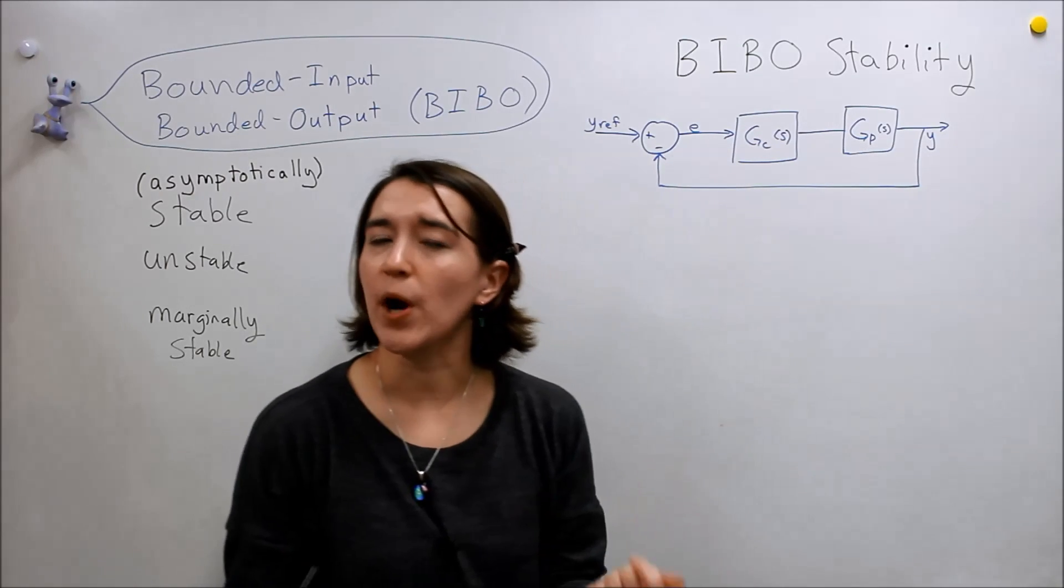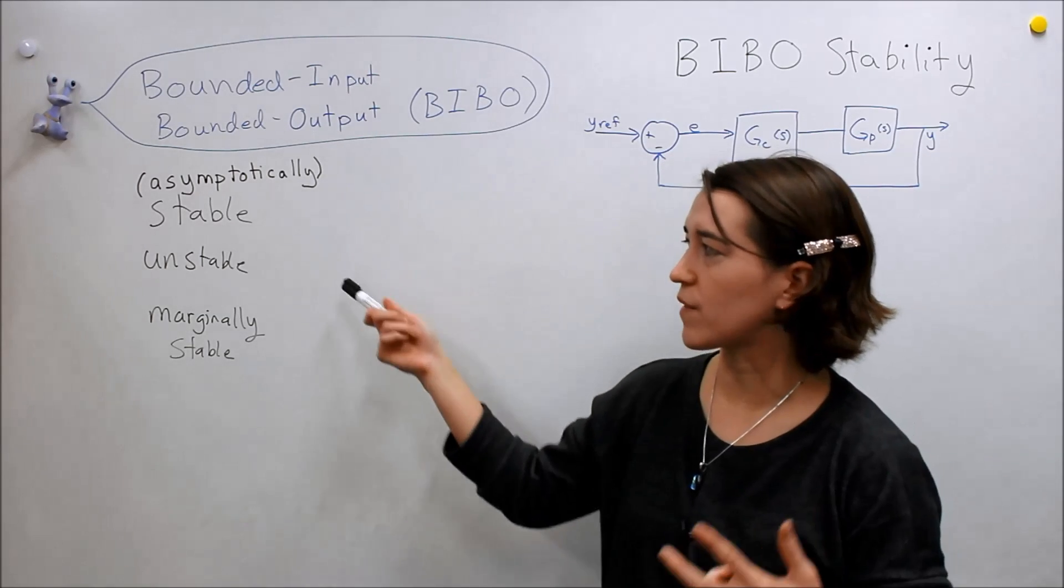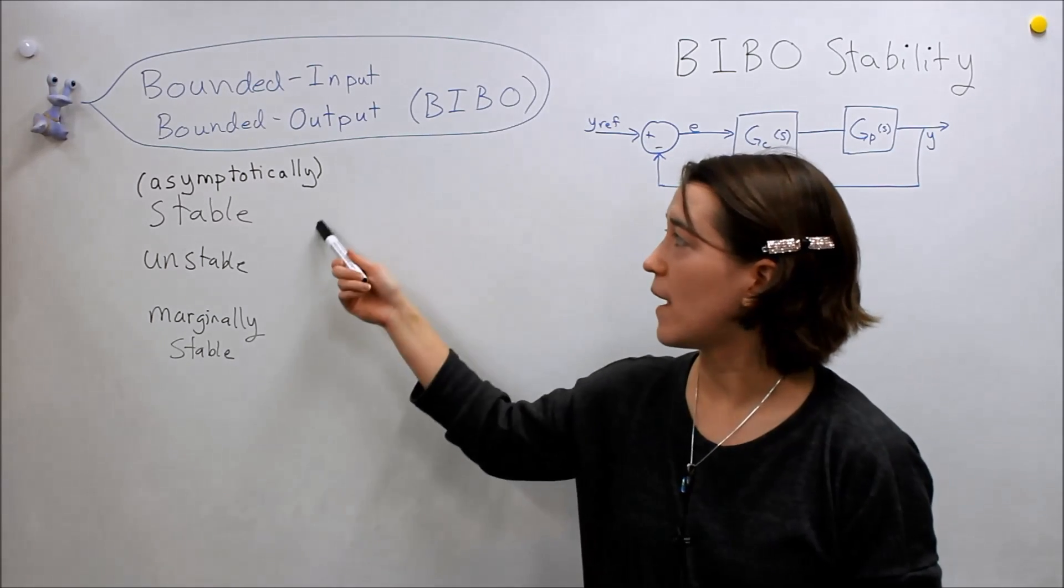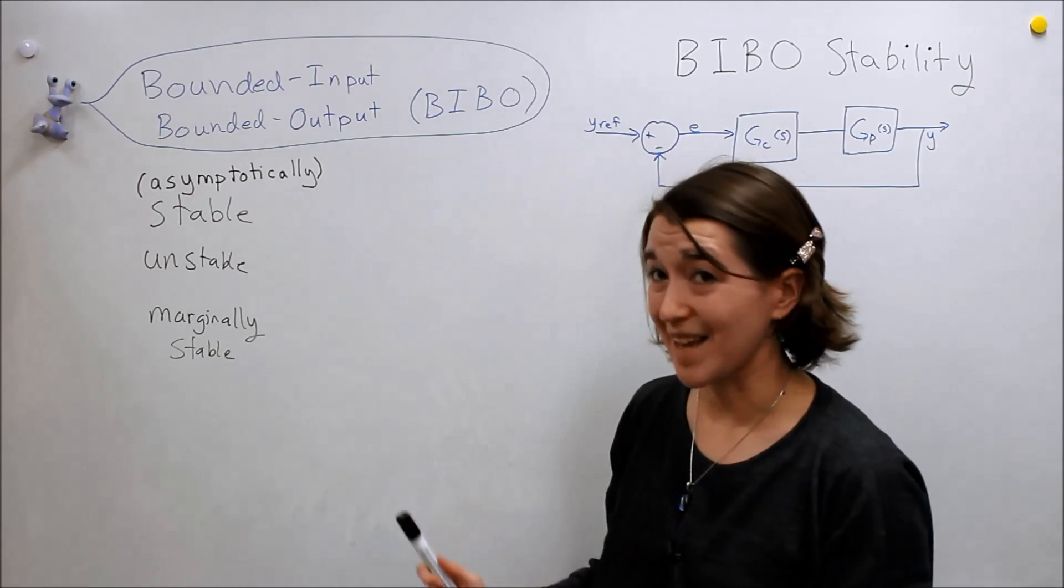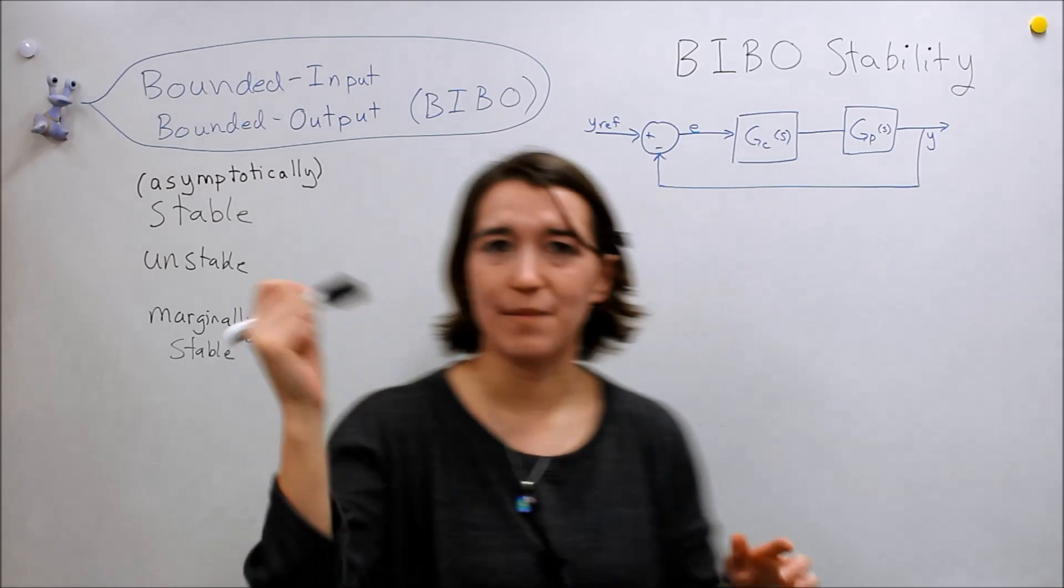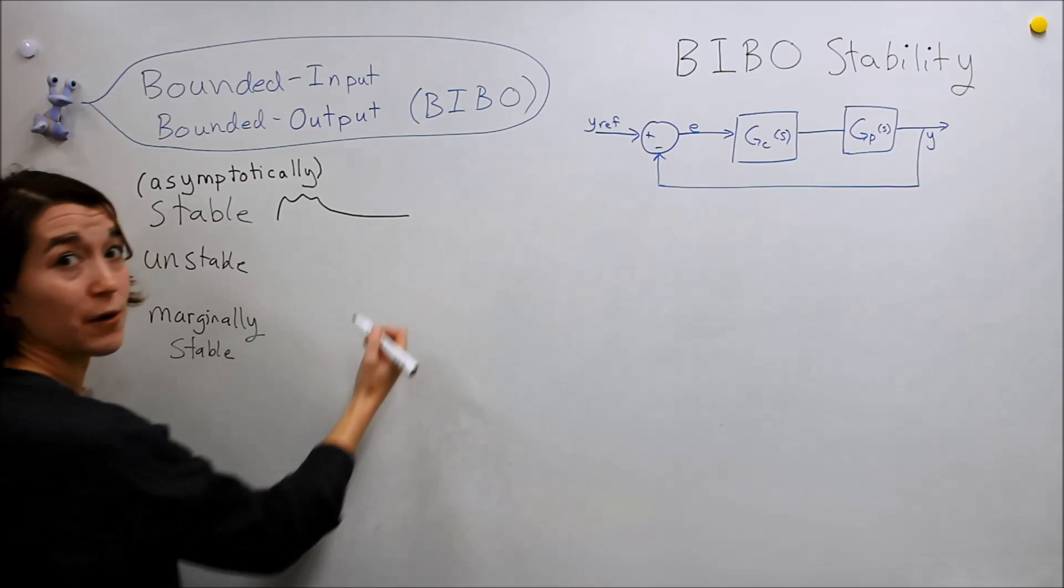So if we remember our other definitions, before we talked about three types of stability. We talked about—we said stable, we meant asymptotically stable. So that means as time goes to infinity, our system will maybe run, but it will eventually go to zero.